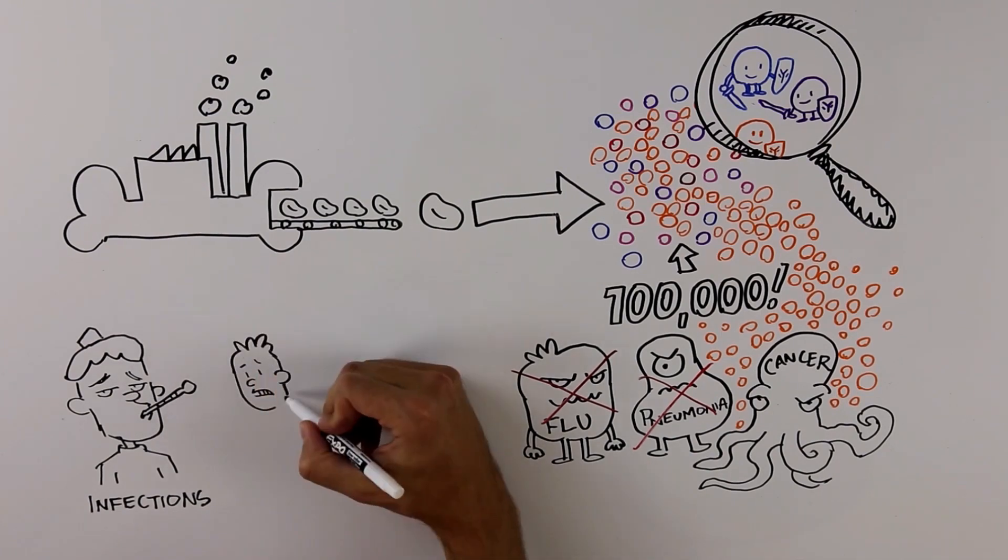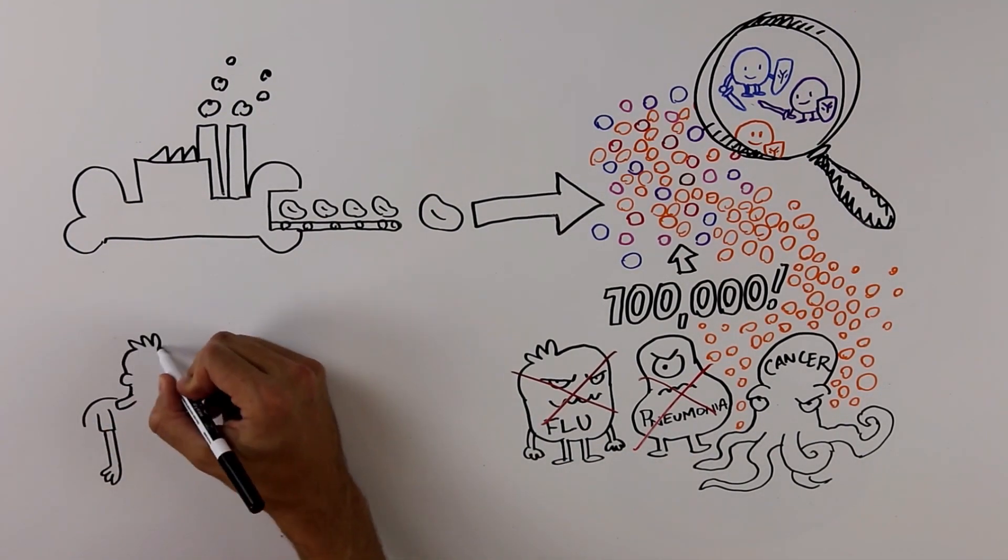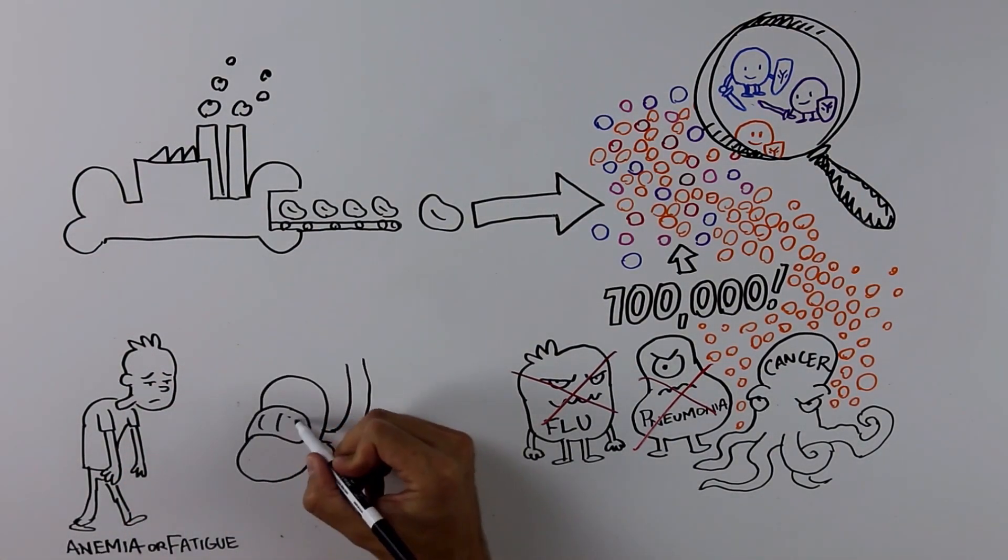This can cause frequent infections, a buildup in bone leading to bone pain and fractures, anemia which causes fatigue, and kidney failure because high levels of protein are in the blood and urine.